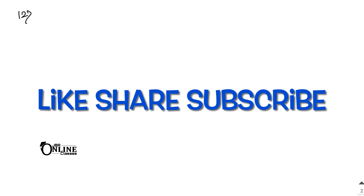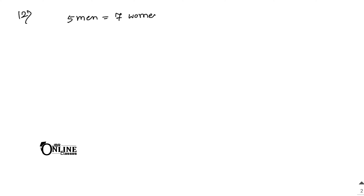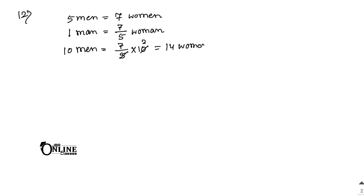If you like the video, please share and subscribe. Sum number 12: if 5 men or 7 women can earn 525 rupees per day. Remember that the earning of 5 men equals the earning of 7 women. So one man's earning equals 7 by 5 women's earning. For 10 men, their earnings equal 14 women's earnings. With 10 men and 13 women together, 10 men equals 14 women, so total equivalent women equals 14 plus 13, which is 27 women.